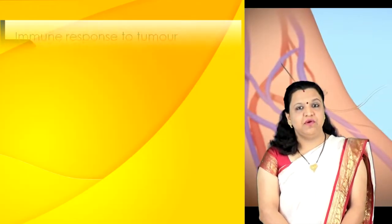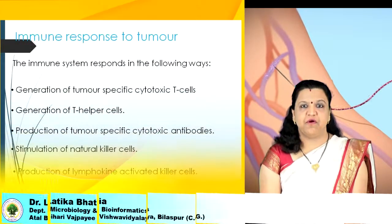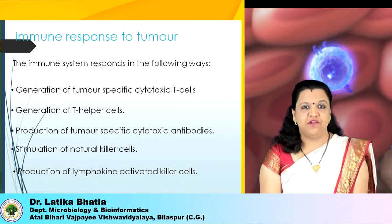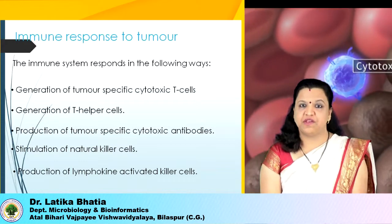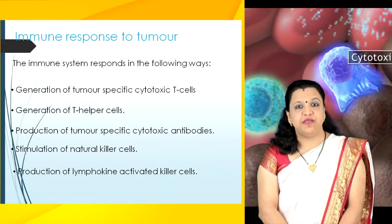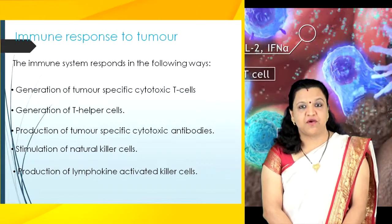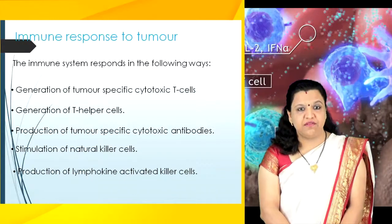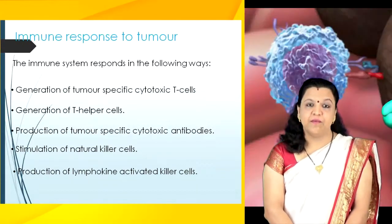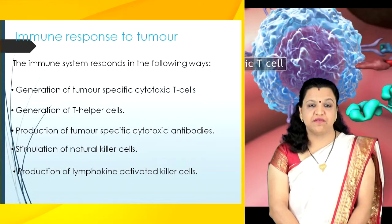The immune system responds to tumors in the following ways: generation of tumor-specific cytotoxic T cells, generation of T helper cells, production of tumor-specific cytotoxic antibodies, stimulation of natural killer cells, and production of lymphokine activated killer cells.